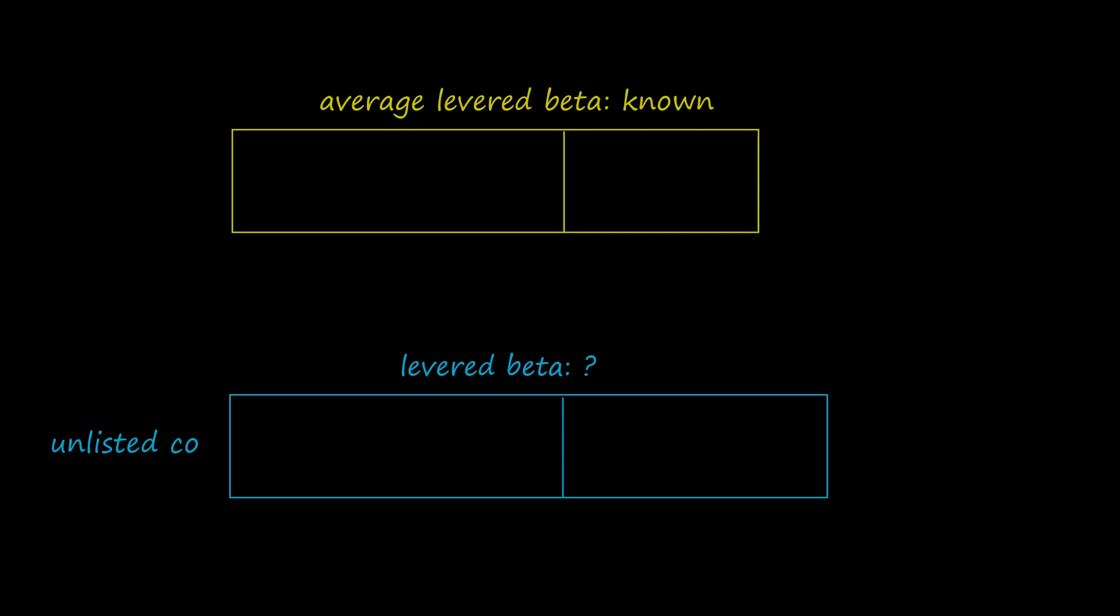Such companies, called comparables, will be in the same industry sector as the unlisted company.